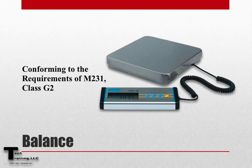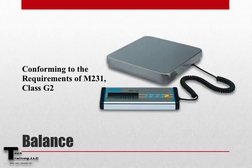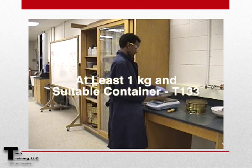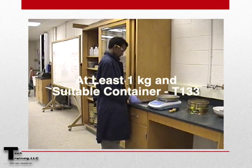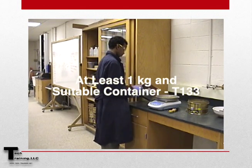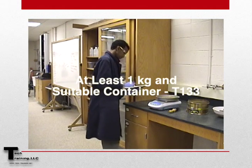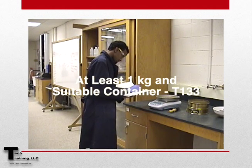To perform this test, we will need a balance conforming to the requirements of M231 class G2. For ASTM, the balance must be accurate to 0.1 grams or 0.1% of the test sample. Furthermore, the balance should be capable of holding at least one kilogram of material and a suitable container like that described in AASHTO T133.